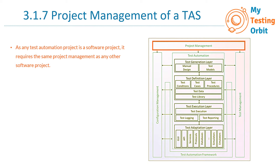We will go through what's in the syllabus and then I will explain it. As any test automation project is a software project, it requires the same project management as any other software project. When we are working on any other software project, there are different steps and phases it goes through, and the same needs to be done for the project management of a test automation solution. It needs to be planned, set up, and managed just like any other project, and it does require dedicated project management.